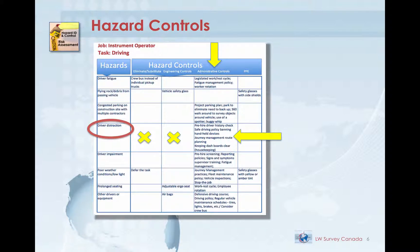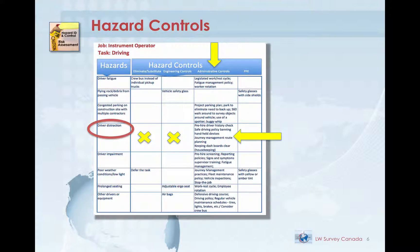Research has shown that good driving habits off the job correlate to good driving habits on the job. So conducting a pre-hire driving history check is the first administrative control we can use to help reduce that hazard. Having and using a safe driving policy that bans handheld devices is another administrative control. A journey management policy that includes route finding before driving to a site reduces the hazard that a driver will become distracted searching for landmarks or road signs. Even keeping dashboards clear so a driver doesn't reach for a falling item has been shown to reduce vehicle incident rates.